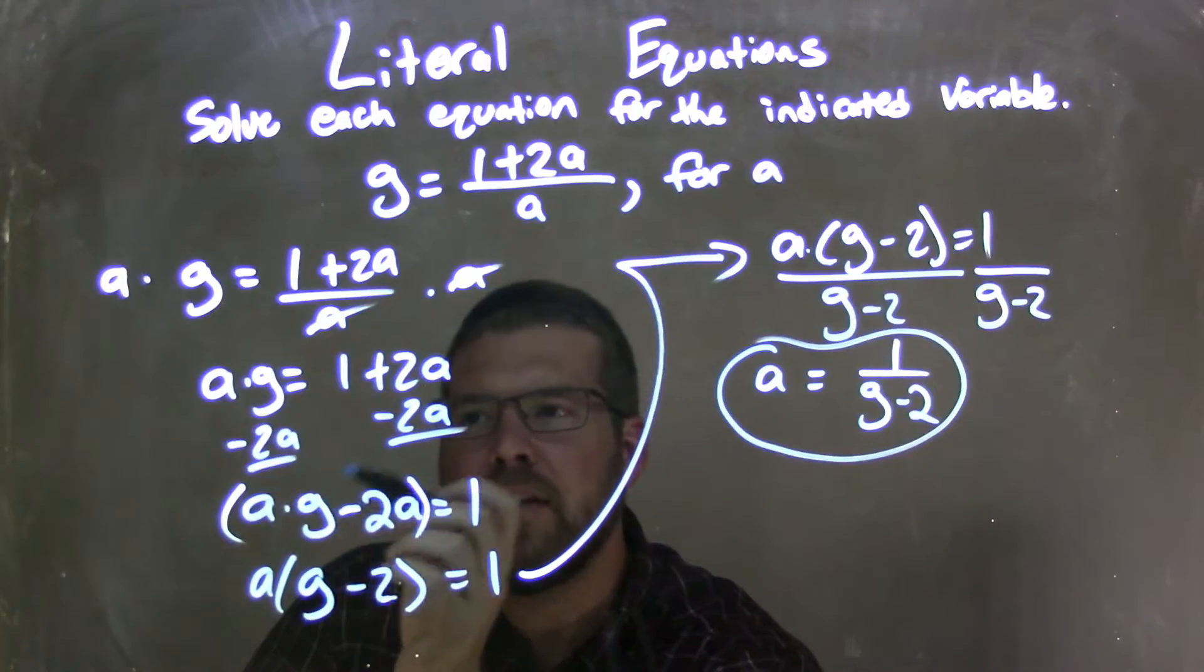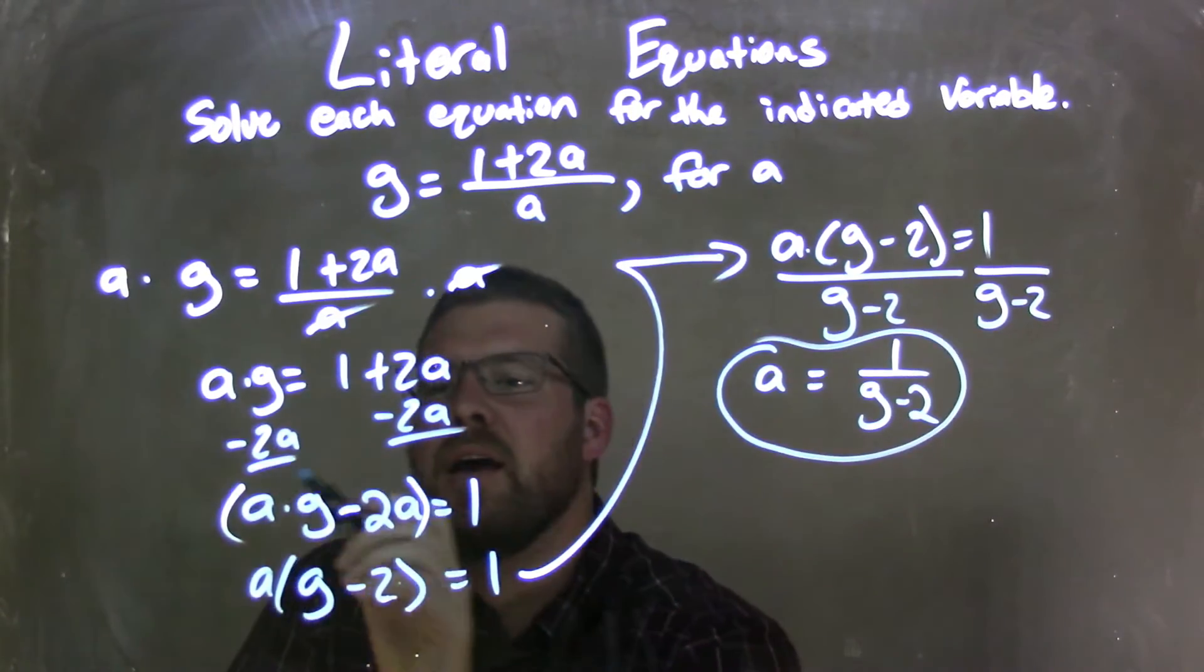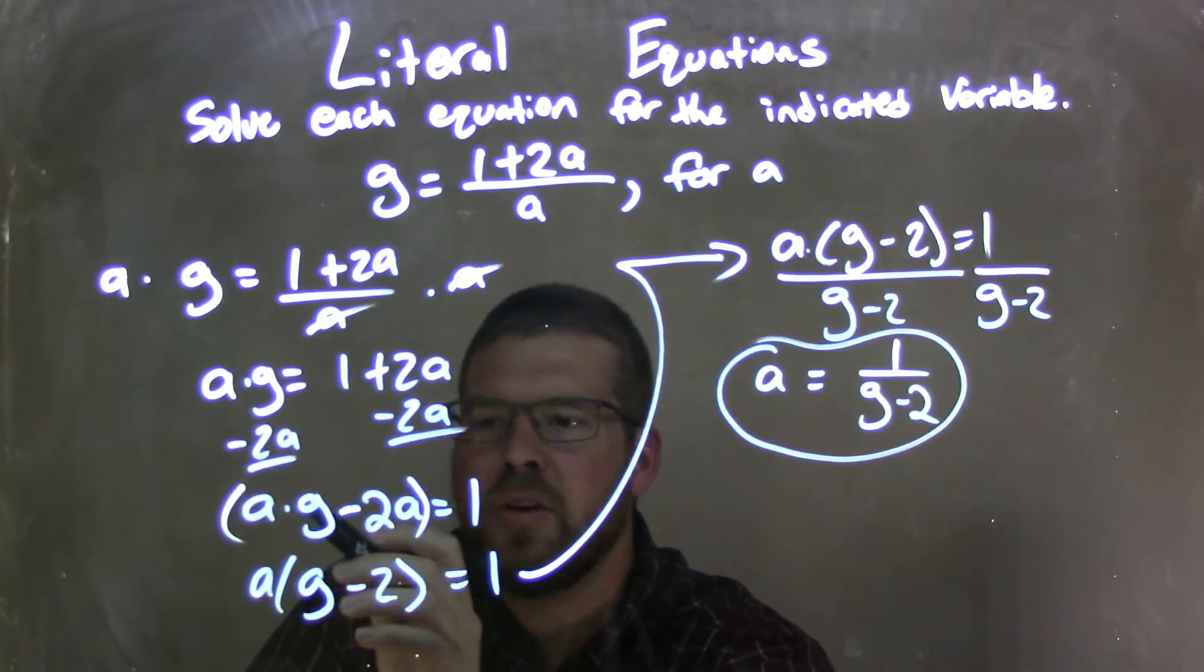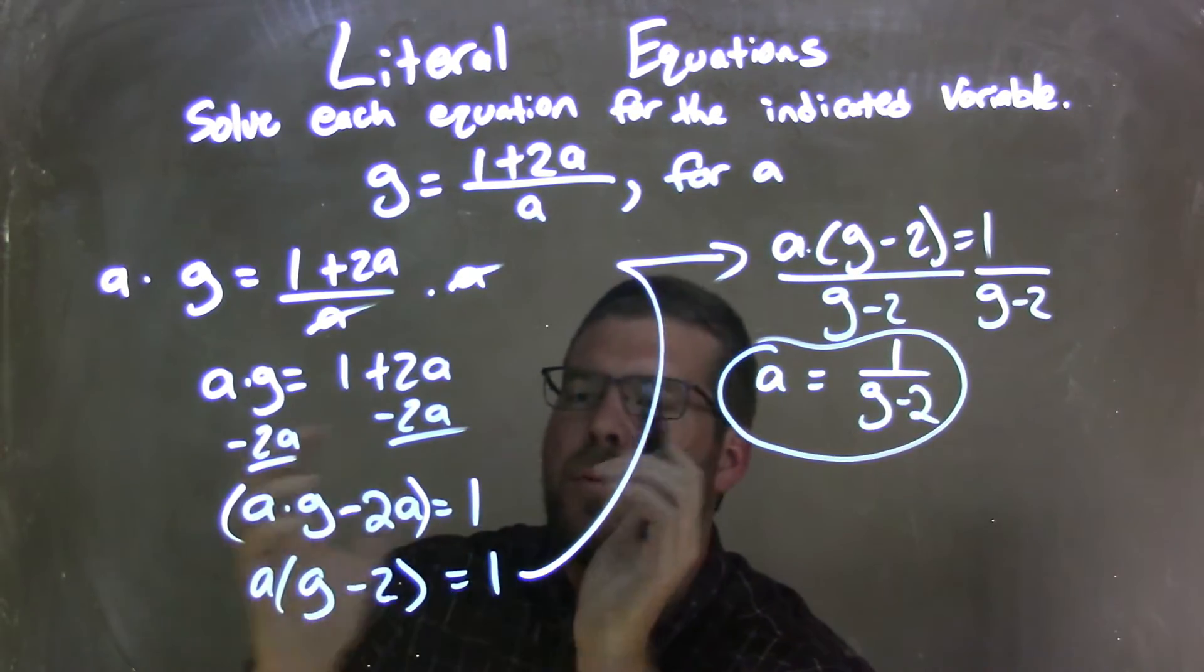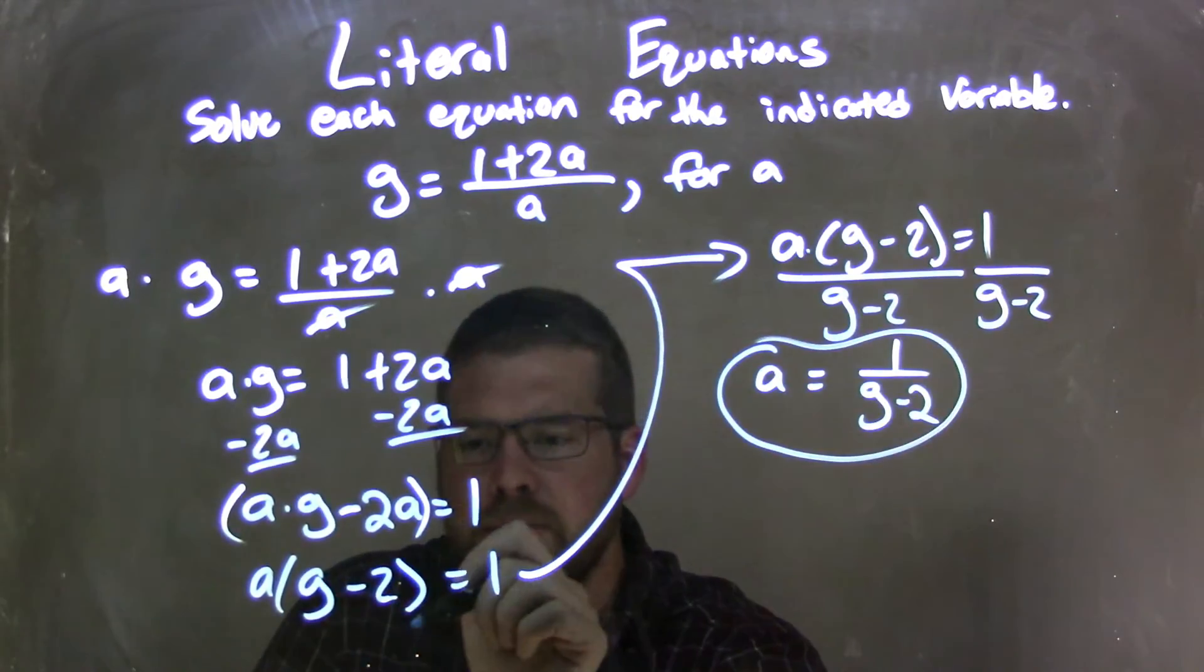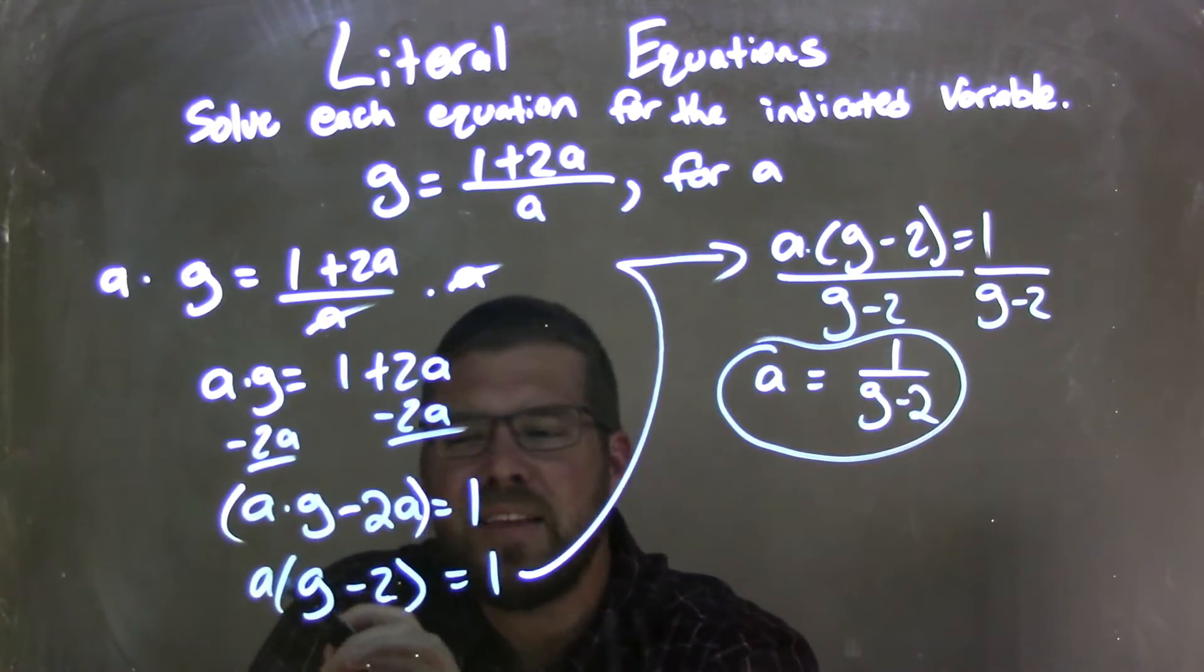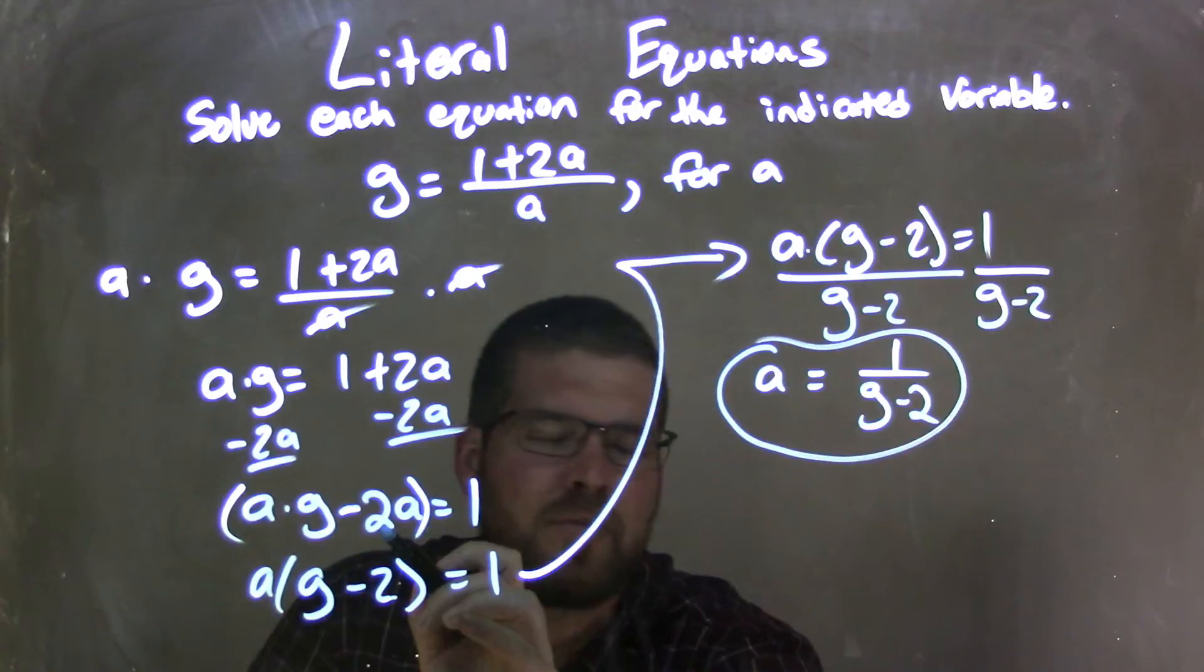I subtracted 2a and brought it to the left to bring all my a's on one side. From there, I noticed it was a times g, or ag minus 2 times a. Well, I saw an a in both parts, so I could pull that out, giving me an a, parentheses, g minus 2, and parentheses, equals 1. And we can see that if I distributed the a back in, I'd get what's written above.